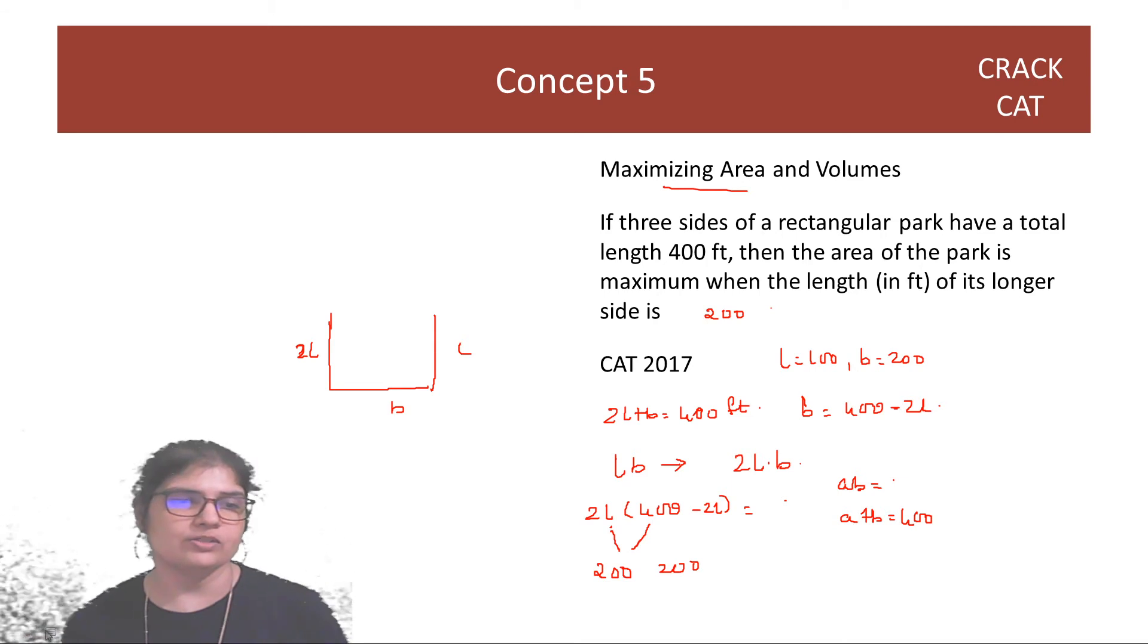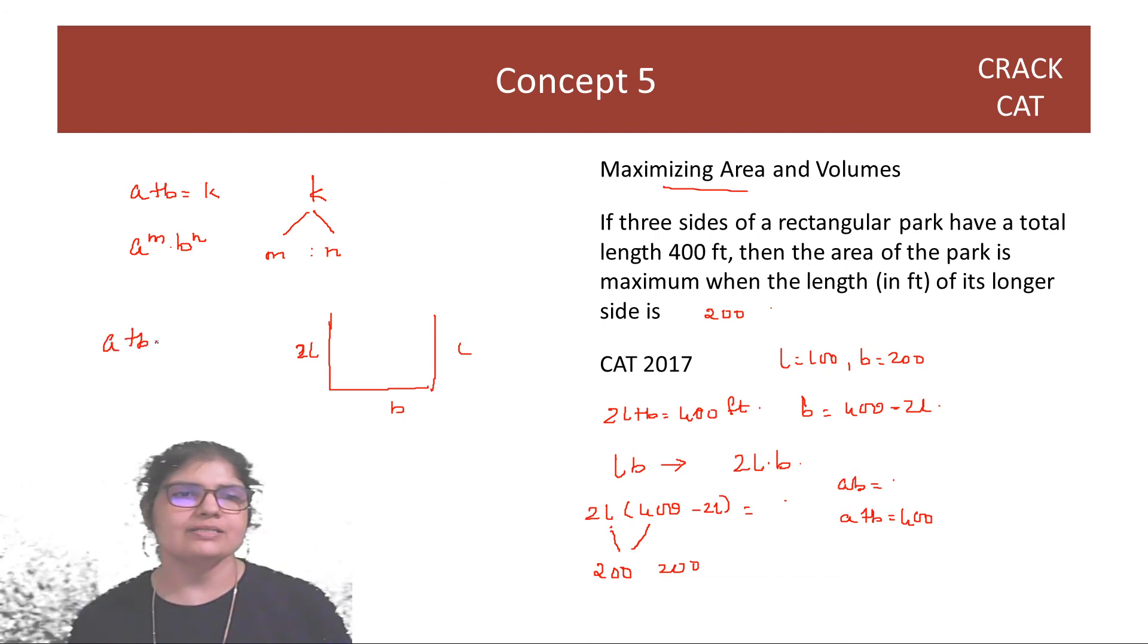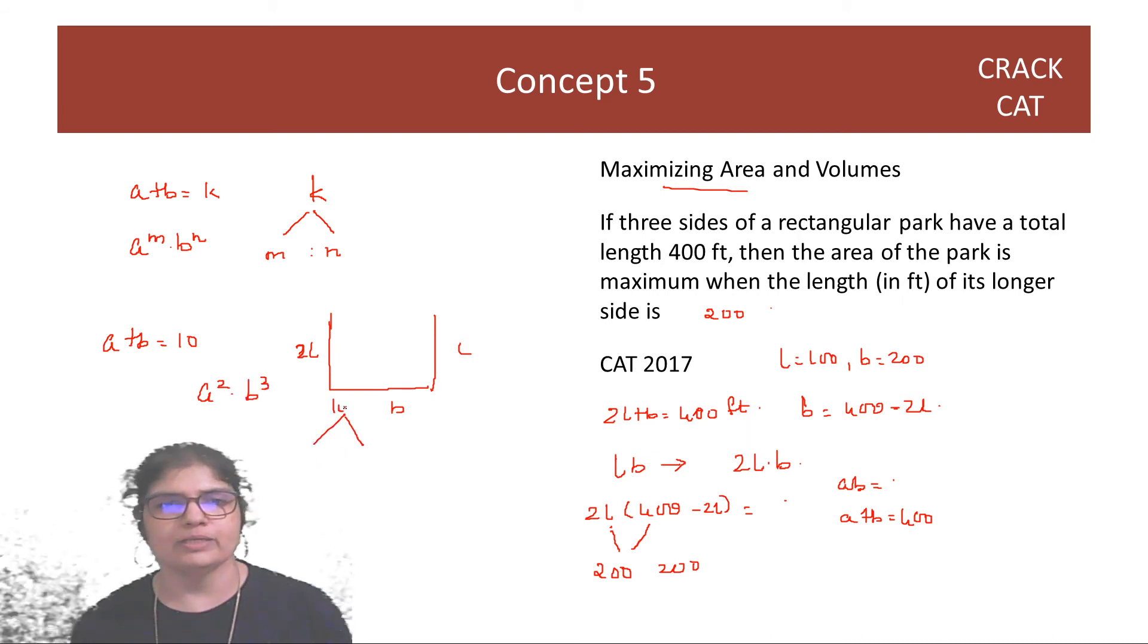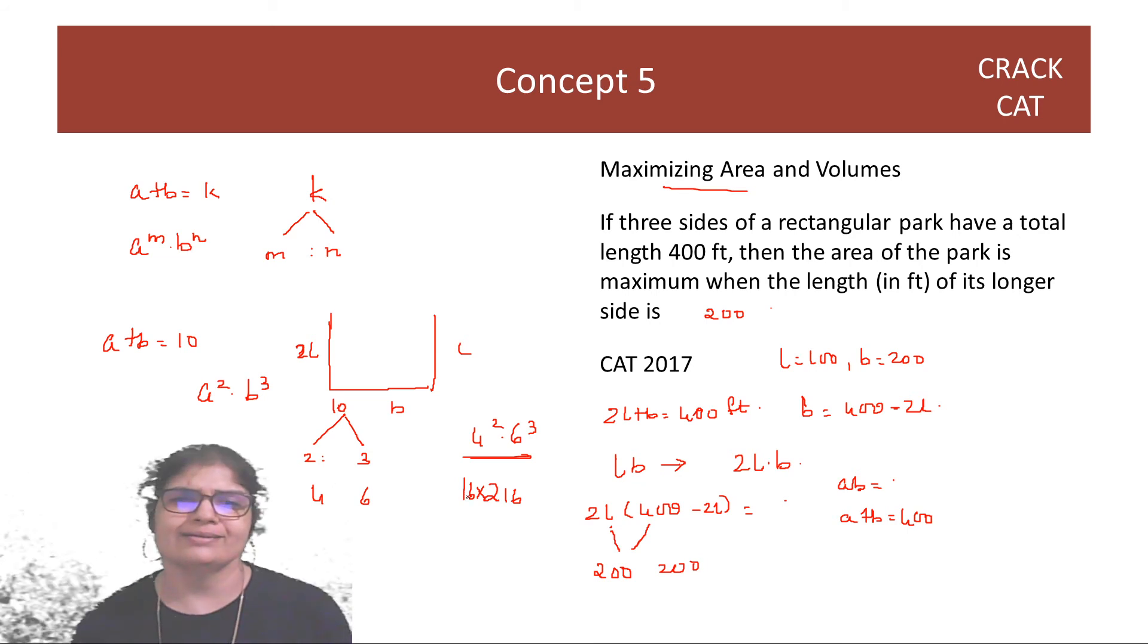Now you may have done this. But the basic concept from here that I want you all to remember is that when A plus B is a constant and you need to maximize A raise to M into B raise to N, then basically you need to break up K in the ratio M is to N. So let me give an example. Let's say you have A plus B is equal to 10 and you need to maximize A square and B cube. So it is 4 square into 6 cube. This will be the maximum. And what is 4 square? It is 16 into 216. This is what we need to find out, whatever that is. You all find it out, I am not finding it out. But this will be the maximum. That's the funda that I want you all to remember. These questions have come in CAT.